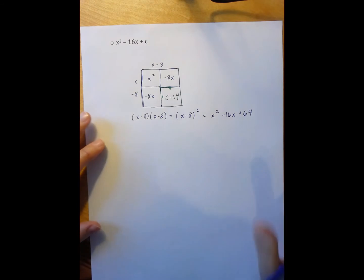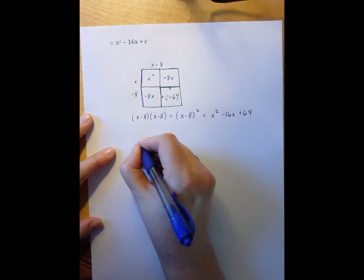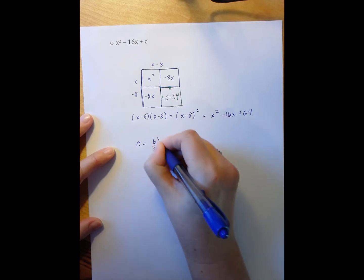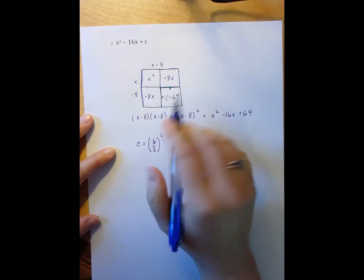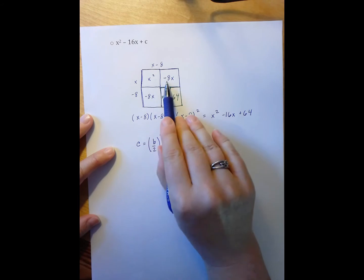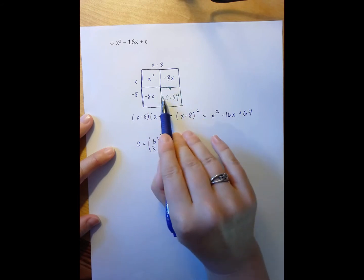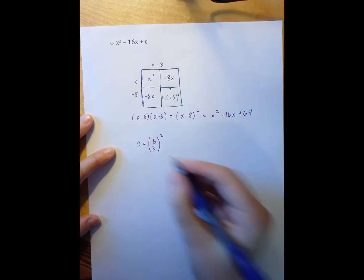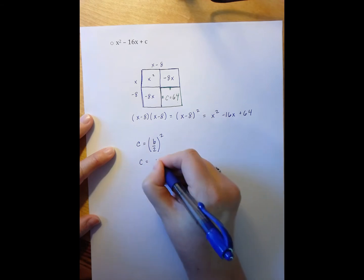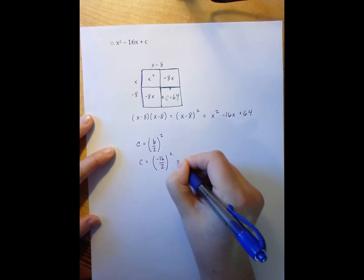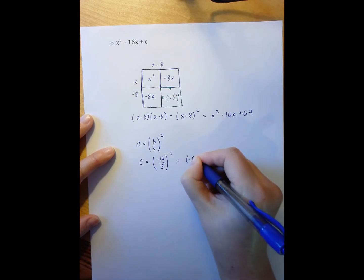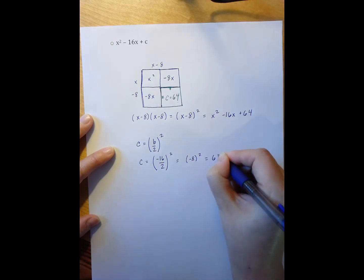Again, the other way to do this problem is to recognize that my C is going to be my B value split into two piles squared. My C is going to be negative 16 divided by 2 squared, which is negative 8 squared, which is 64.